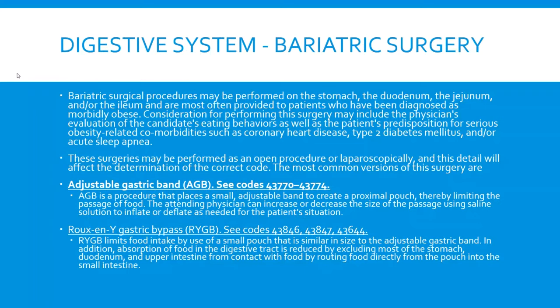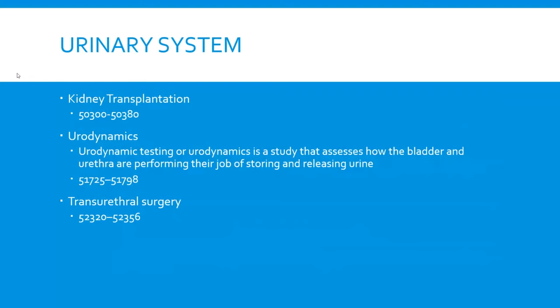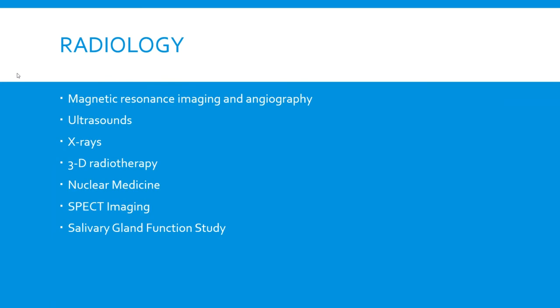You're going to see some procedures from the digestive system on bariatric surgery. I've got the two areas that you'll most likely see: adjustable gastric band and Roux-en-Y gastric bypass, and what code ranges they come from. You're going to see a code question or two from the urinary system. Some of the general areas they may come from: kidney transplantation, urodynamics, and transurethral surgery. Transurethral surgery is very common for a prostate resection or prostate removal for men.